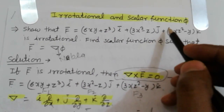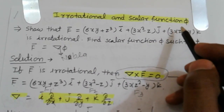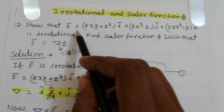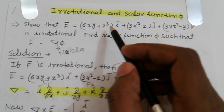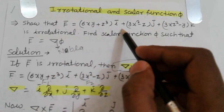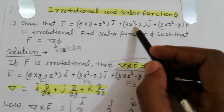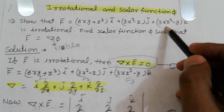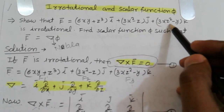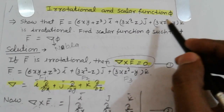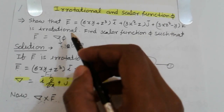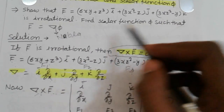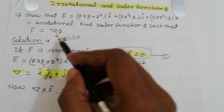Problem of irrotational vector and scalar function phi. Given vector F equal to (6xy + z³)i + (3x² - z)j + (3xz² - y)k, where i, j, k are unit vectors, F is irrotational. Find a scalar function phi such that vector F is equal to nabla phi.